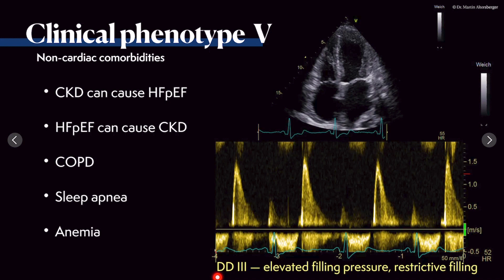Furthermore, we have to think about COPD patients, who can also develop heart failure with preserved ejection fraction due to their chronic lung disease, as well as patients with sleep apnea and patients with anemia. Here is an example of another case of diastolic dysfunction grade 3, where the elevated filling pressures are quite obvious.